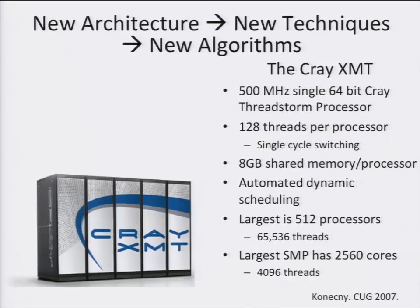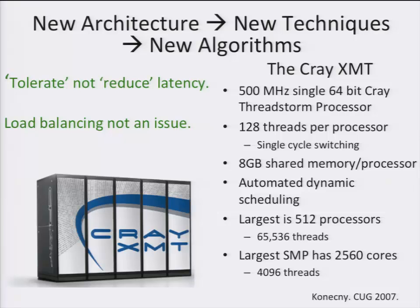Thus, there's an interest in new architectures for these problems. Machines like the Cray XMT, which have a shared, completely flat, cache-less memory system, and hardware support for up to 128 software threads per processor. At this machine, one really interesting fact is that the processor switches between threads ready to work at every single cycle. Thus, it's able to tolerate rather than reduce latency. Additionally, there's automated dynamic scheduling, which means that load balancing is not an issue. Memory contention, however, is still a problem.